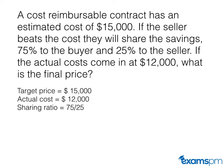The reason the buyer wants a share ratio is to give the seller an incentive to come below the target price, creating a win-win situation — the buyer saves money and the seller earns more by coming below the actual cost. Because the actual cost is $12,000 and the target was $15,000, the seller saved the buyer $3,000. Of that $3,000, 75% goes to the buyer and 25% goes to the seller, so 25% of $3,000 is $750.